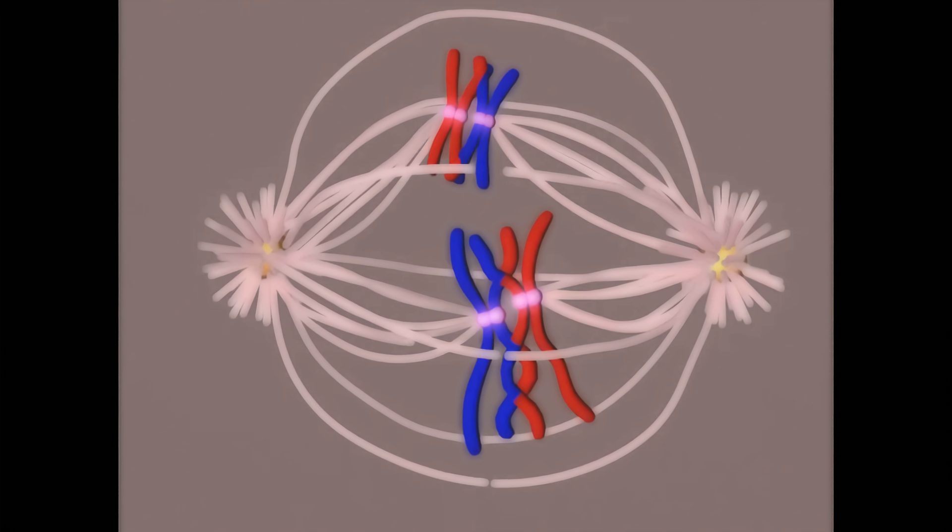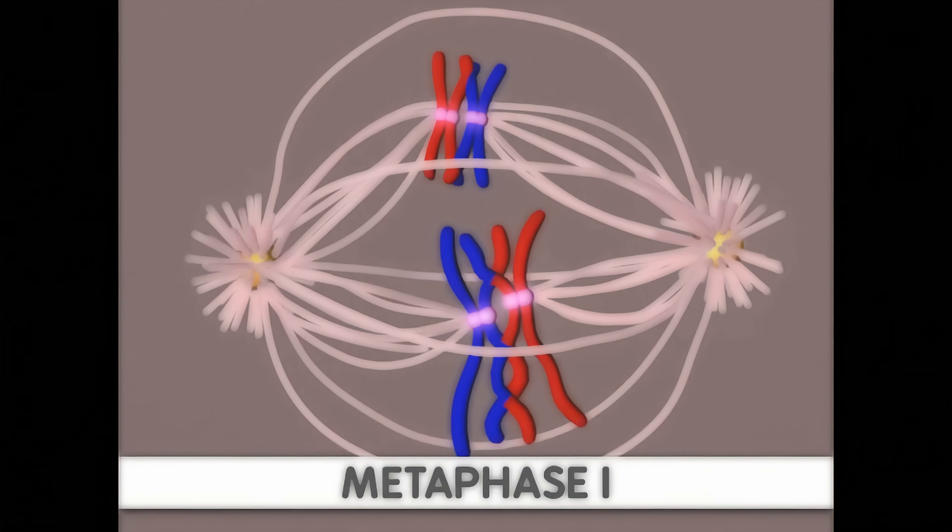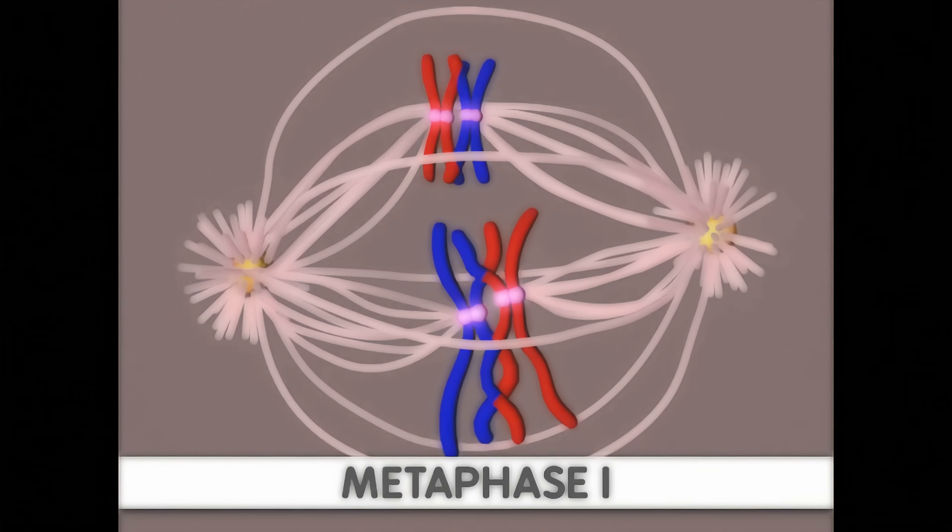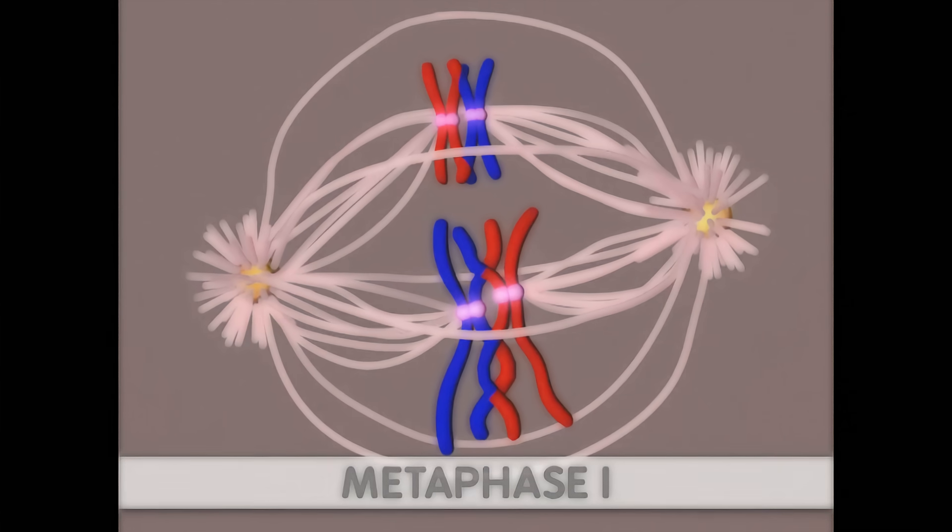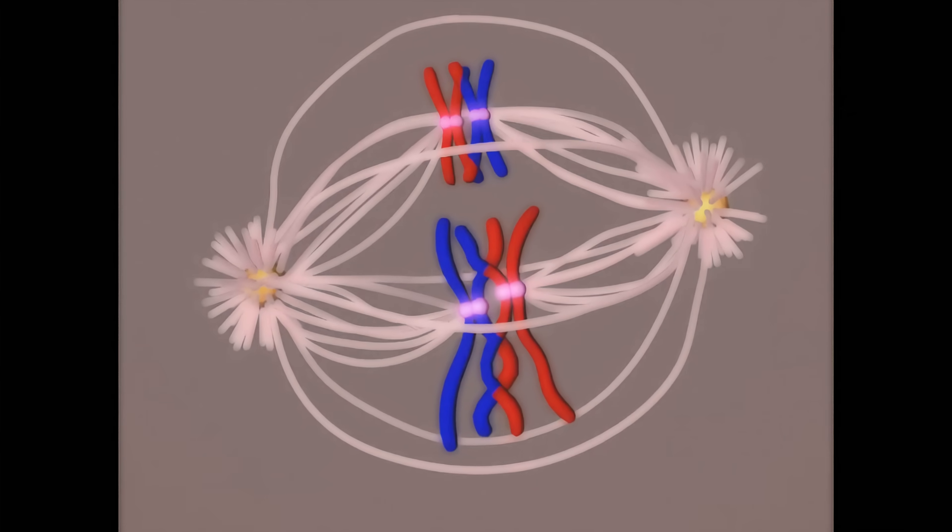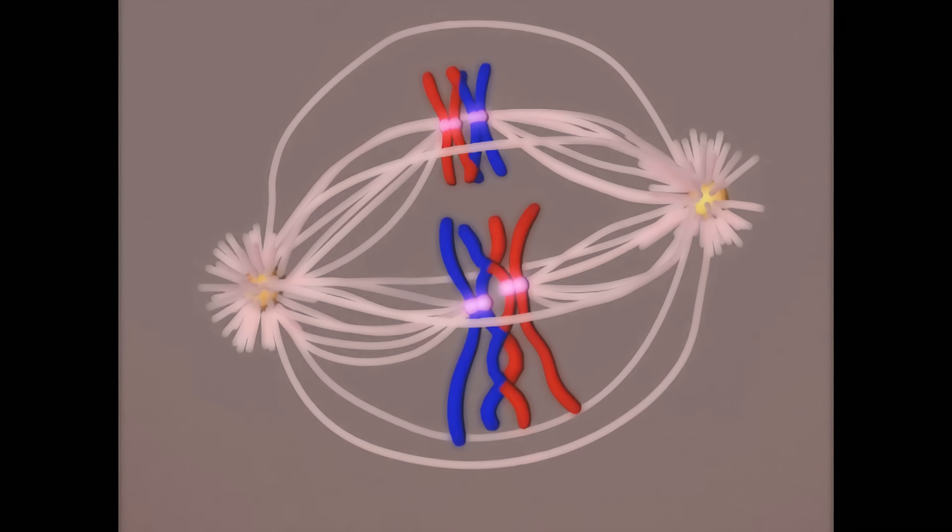The next phase of meiosis I is called metaphase I. Here, the synapsed chromosomes align at the equator of the cell. The chromosomes align randomly, which results in different combinations each time meiosis occurs.